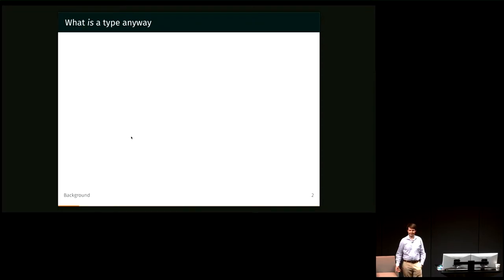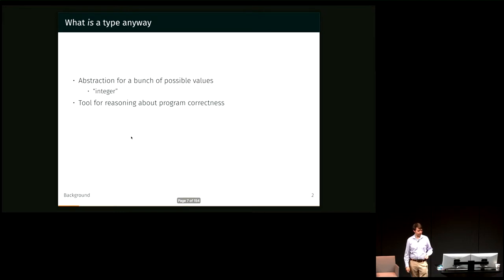So first of all, what is a type? I think of it as just sort of abstraction for a bunch of possible values. So it's like integer. This variable is anything that tells us what possible values it could take on. A type or a type system is also a tool for reasoning about program correctness. It allows us to say whether something is going to work the way we intend it to work or not.